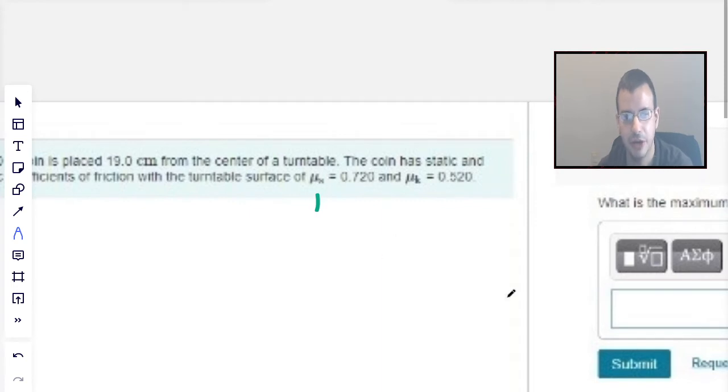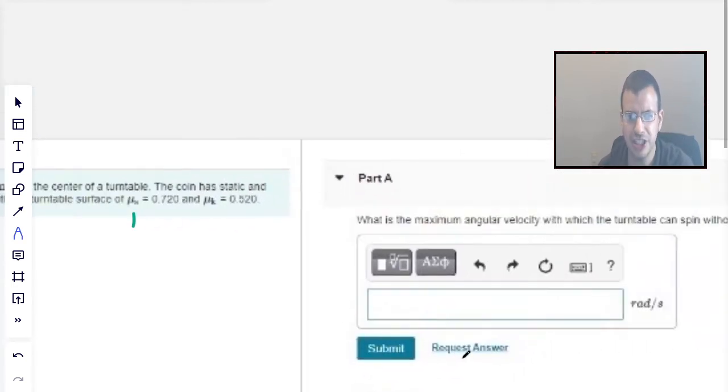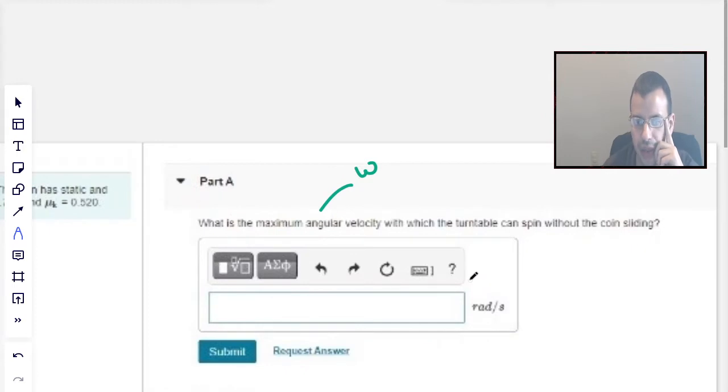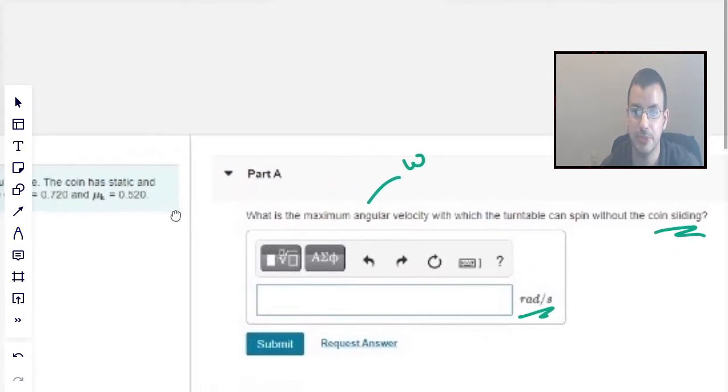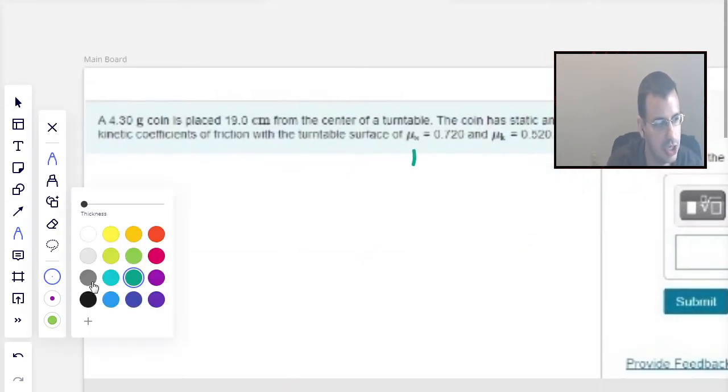It makes sense that the static would be bigger than the kinetic. It usually is. What is the maximum angular velocity, omega, with which the turntable can spin without the coin sliding? It's measured in radians per second, which makes sense because angular speed is measured in radians per second.